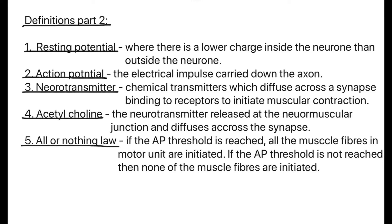Neural transmitters are chemical transmitters which diffuse across the synapse, binding to receptors to initiate muscular contraction. Acetylcholine is the neural transmitter released by the neuromuscular junction and diffuses across the synapse. Finally, the all-or-nothing law: if the action potential threshold is reached, all the muscle fibres in that motor unit are initiated. If the action potential threshold is not reached, then none of the muscle fibres are initiated.